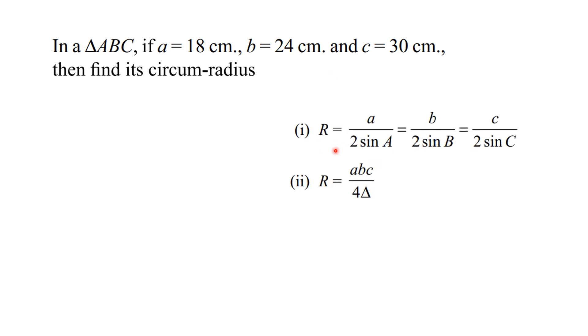The formula for circum-radius is R equals a divided by 2 sin A equals b divided by 2 sin B equals c divided by 2 sin C, and R equals abc divided by 4A.